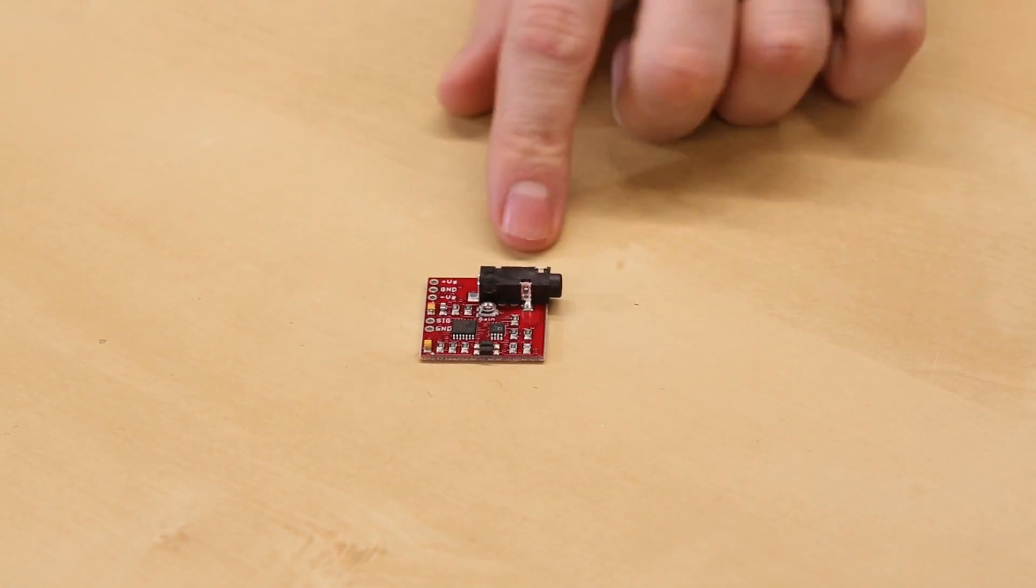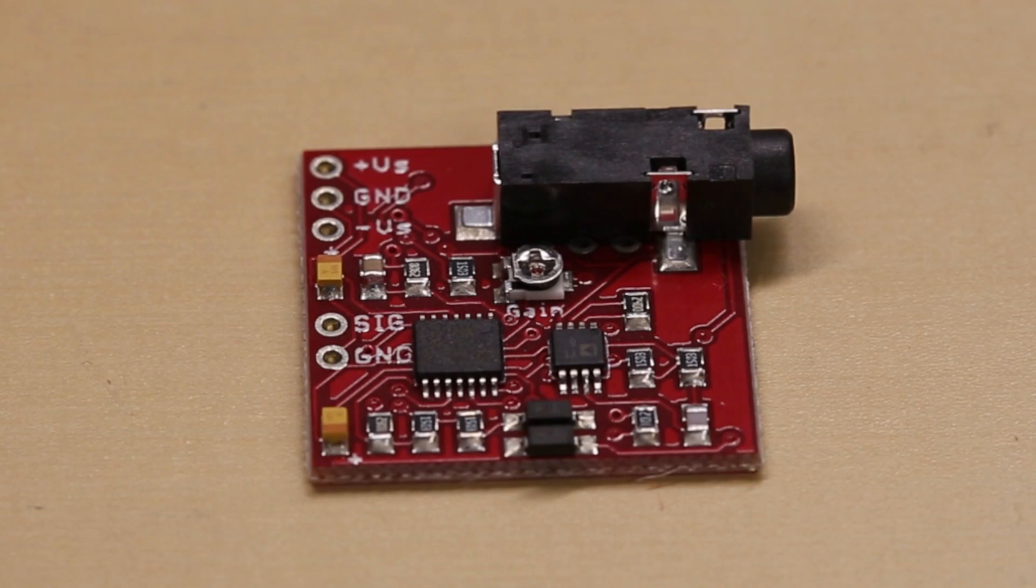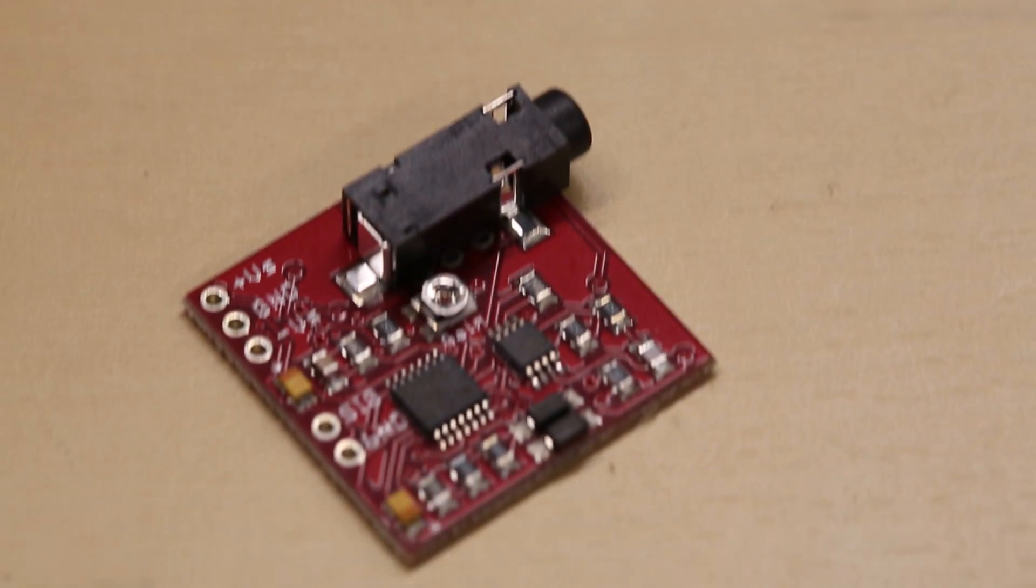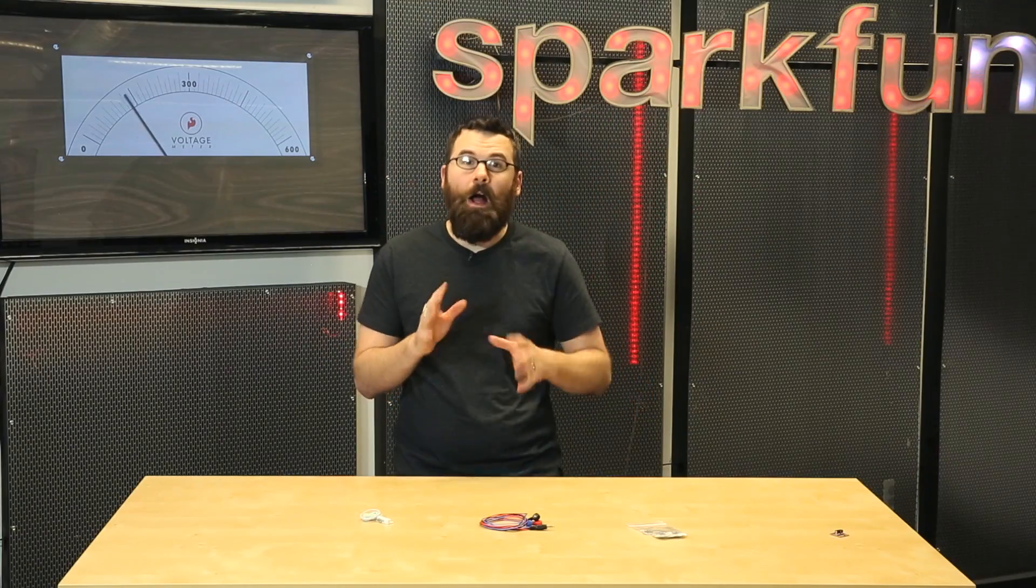The Muscle Sensor Board is something that we've carried previously, but now we have it back in stock, and it comes in a slightly different configuration this time. This time it comes with just the bare board, and you can buy this kind of a la carte, any which way you want.